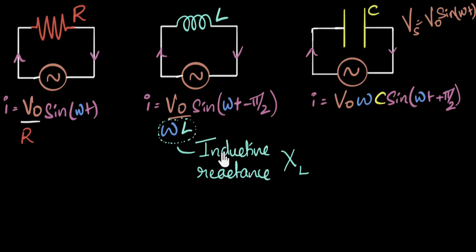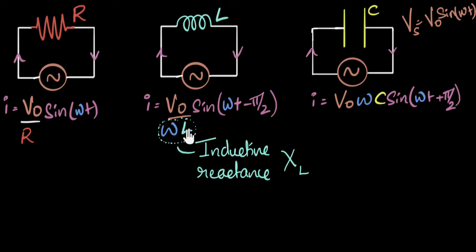What will be the unit of inductive reactance? One way is to find the units of omega and inductance and multiply them. But a quicker way: since I equals V divided by something, that something must have the units of resistance — ohms — because it equals V divided by I. So inductive reactance has the unit of ohms, the same unit as resistance, but it is not resistance, and we'll see the difference in a second.